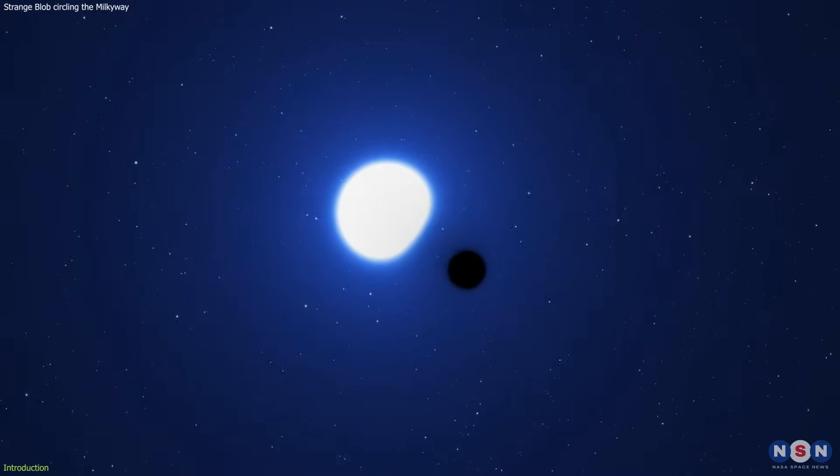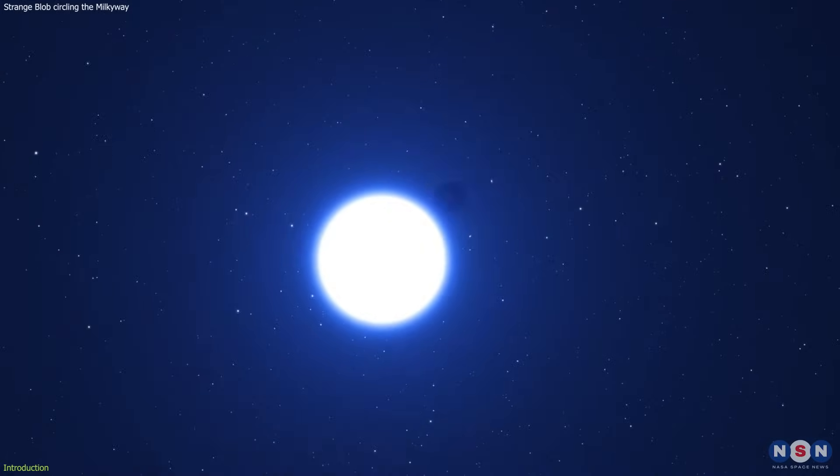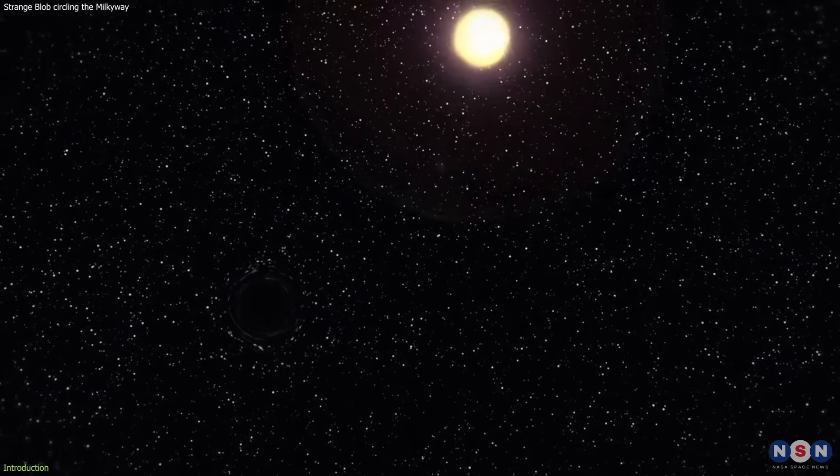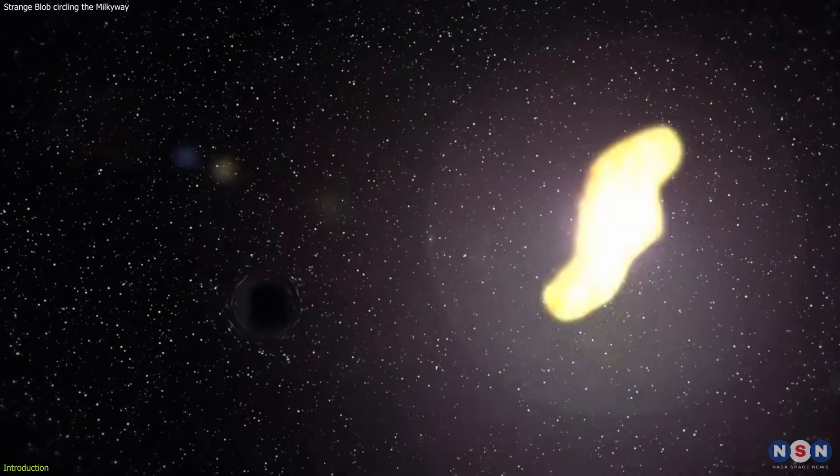The blob completes a full loop around Sagittarius A-star in just 70 minutes, and it lasts for only one orbit before being torn apart by the black hole's gravity.